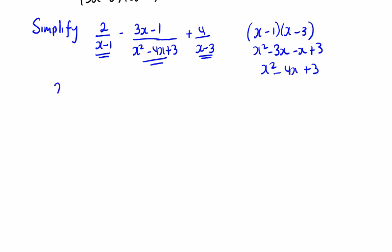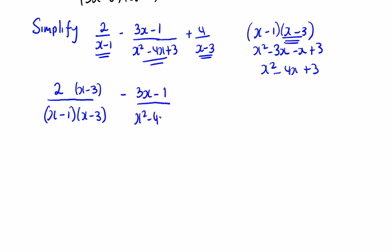So we take the 2 on its own — it's already over x minus 1, so we want to keep this 2 over x minus 1. But to get the x minus 3 part of the denominator in, we'd have to put an x minus 3 on top and bottom — they'd cancel to give 1, so we're not changing the 2 over x minus 1. Then we have minus 3x minus 1 over x squared minus 4x plus 3, and plus 4 over x minus 3, with an x minus 1 on top and bottom. Now we have the same denominators for all of them.